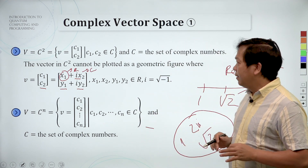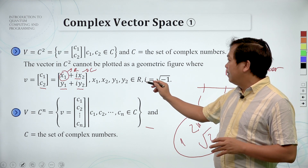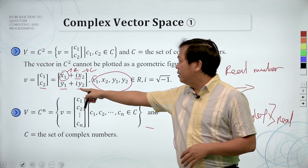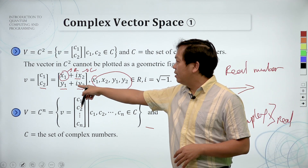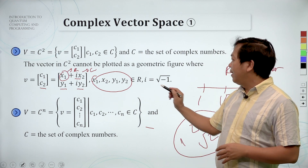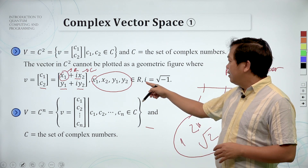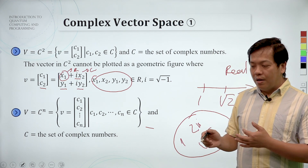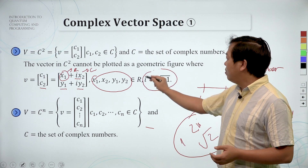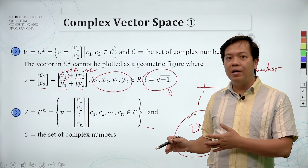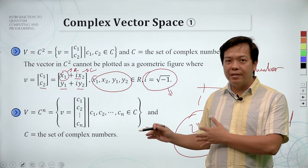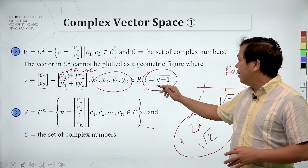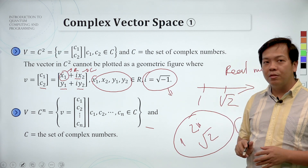In the complex number, we have a notation called i, and the value of i is equal to the square root of minus one. This value — we will explain more in the next lesson how to calculate with this number. For now, you only need to know that i equals the square root of minus one.